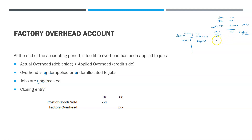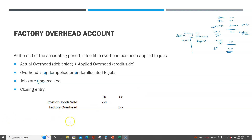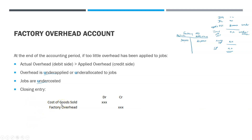If our jobs are under-costed and we add a markup to calculate our selling price, we're not selling the job at the correct price — our price is too low, and some of our markup ends up covering costs instead of profit. If jobs are under-costed, the closing entry is the opposite of what we did earlier. We debit cost of goods sold and credit the factory overhead account. The factory overhead account has a $9,000 debit balance, so we credit $9,000 to factory overhead and debit $9,000 to cost of goods sold.